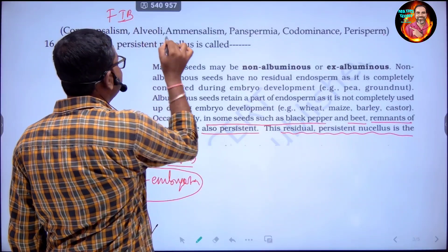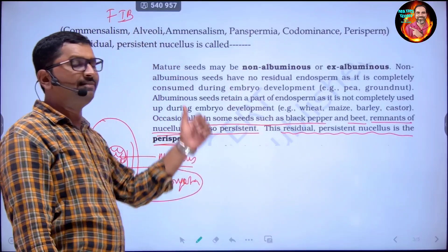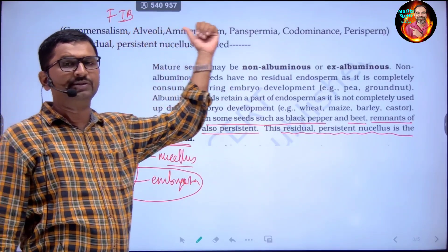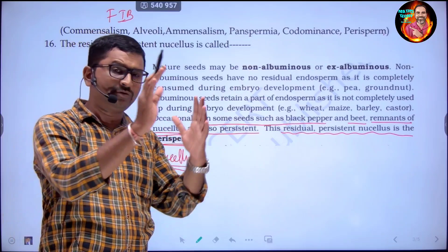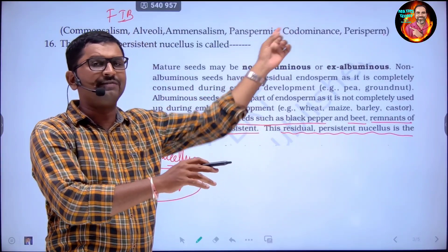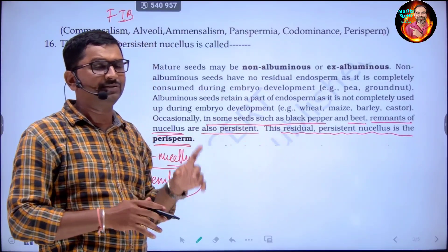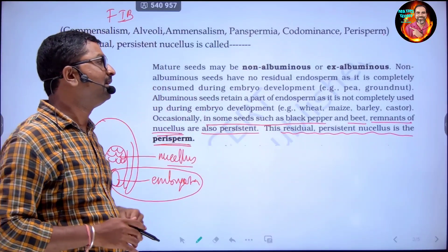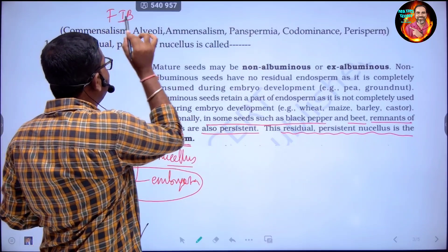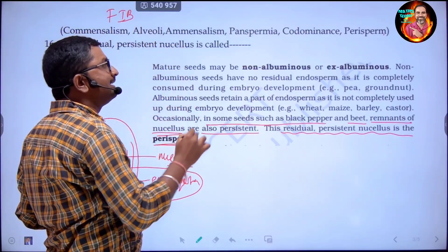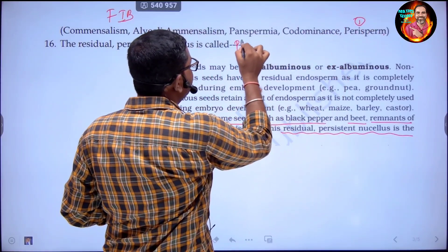The residual persistent nucellus is called perisperm. Fill in the blank: perisperm. Be careful — if you make a wrong choice for any of the fill-in-the-blanks, it will affect the rest. So think carefully. Residual persistent nucellus is called perisperm.